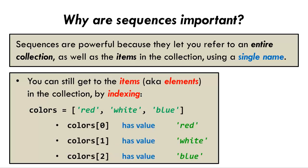The notation is the sequence name, here colors, followed by an open square bracket symbol, followed by a non-negative integer called the index that specifies the item of the sequence which is being referenced, followed by a closed square bracket symbol.